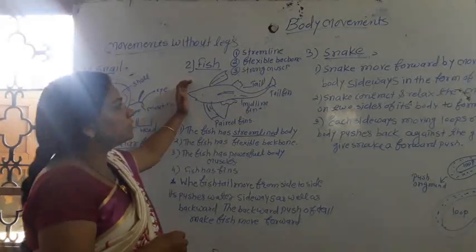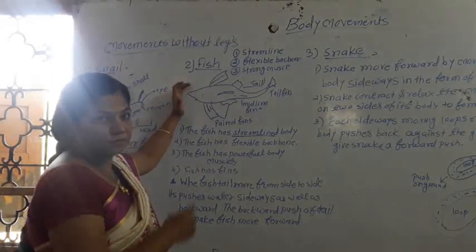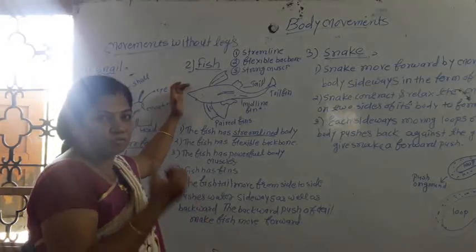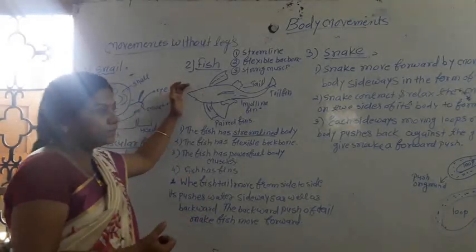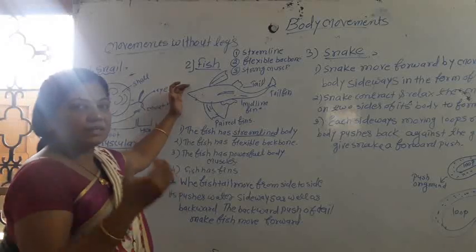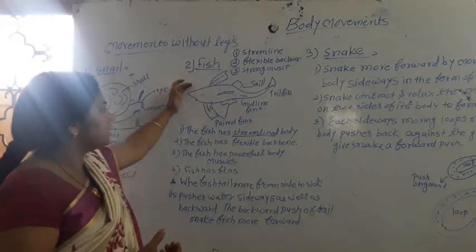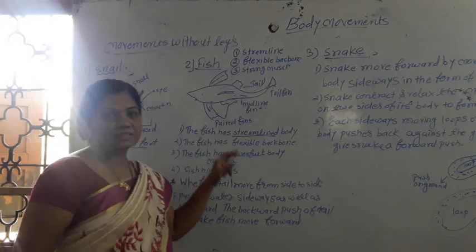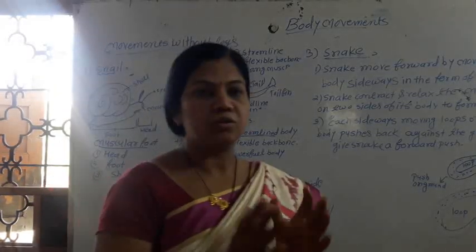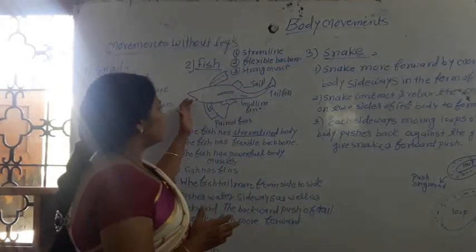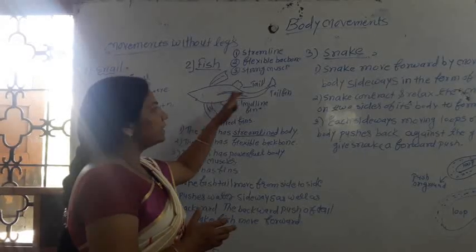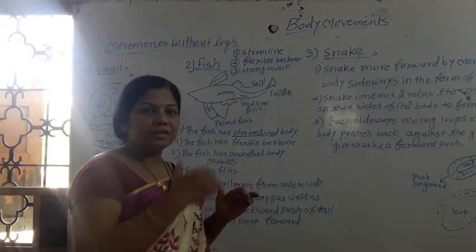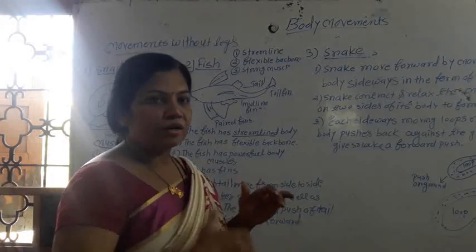Next, for example, fish. Fish has a streamlined body shape, its backbone is flexible, and it has powerful, strong muscles, so it can easily move through water. Streamlined body means tapered at both ends — thin at the front, thick in the middle, and again thin at the back — so water can easily flow around its body.